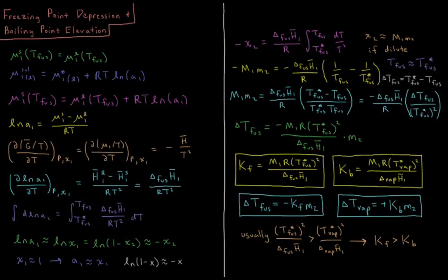This video will discuss freezing point depression and boiling point elevation as colligative properties of a solution. The melting temperature, or the temperature of fusion, of a substance is the point at which the chemical potential of the solid phase of the solvent in our solution is equal to the chemical potential in the liquid phase. The subscript 1 here indicates that it is the solvent of our solution.